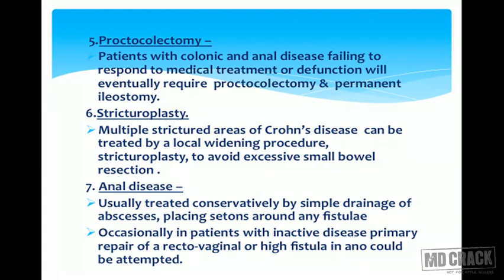Proctocolectomy: Patients with colonic and anal disease failing to respond to medical treatment or defunctioning will eventually require proctocolectomy and permanent ileostomy. Stricturoplasty: Multiple strictured areas of Crohn's disease can be treated by a local widening procedure called stricturoplasty, to avoid excessive small bowel resection. Anal disease is usually treated conservatively by simple drainage of abscess and placing a seton around any fistula. Occasionally in patients with inactive disease, primary repair of rectovaginal or high fistula-in-ano could be attempted.